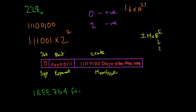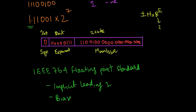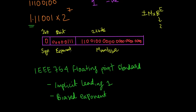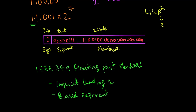The floating point notation is the IEEE 754 floating point standard. Its characteristics are: implicit leading one — the leading 1 is always there and we leave it implicit — and the biased exponent. We add a constant bias so that negative exponents are represented as positive stored values.